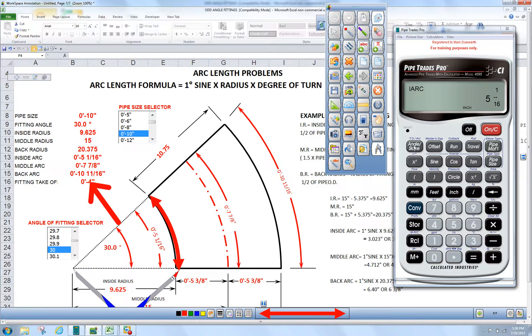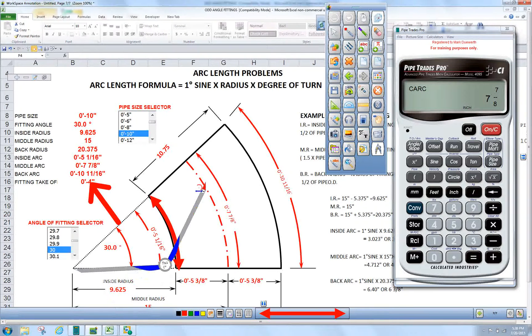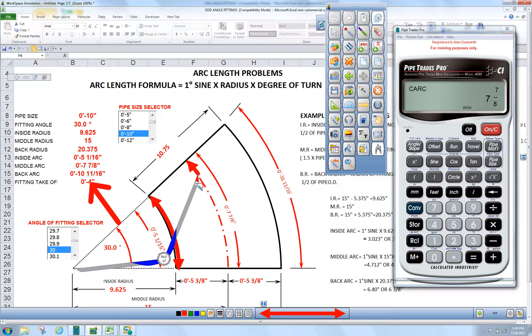If we press angle slope again, you can confirm that the middle arc would be 7 and 7/8.